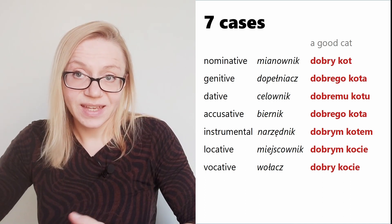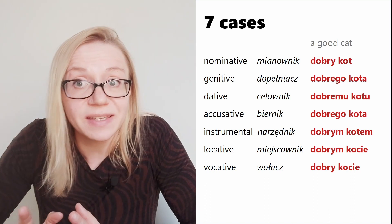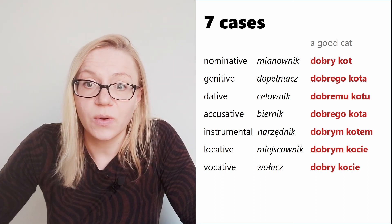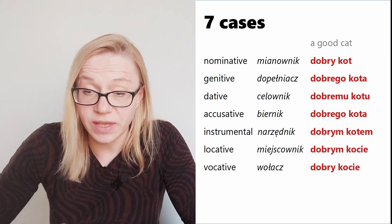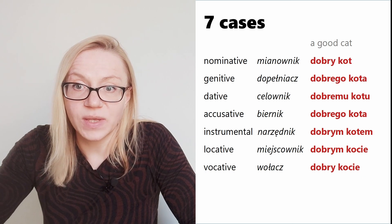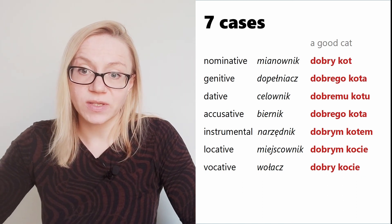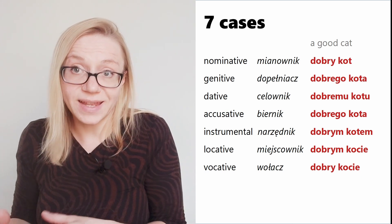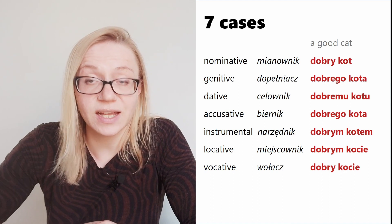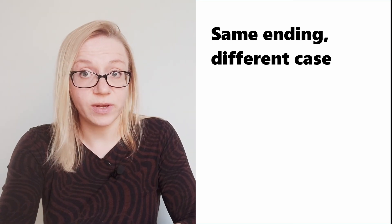We can see that 'the good cat' in Polish looks differently depending on the case, and there are specific endings for each case — sometimes they repeat. For example, 'dobry' appears in both nominative and vocative; 'dobrego' in genitive and accusative; 'dobrym' in instrumental and locative. For the cat: 'kota' is in genitive and accusative, and 'kocie' in locative and vocative.